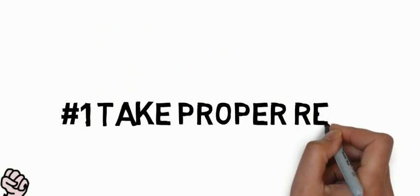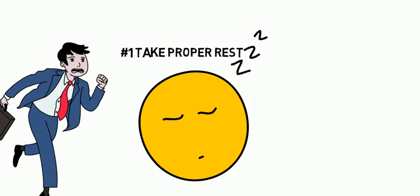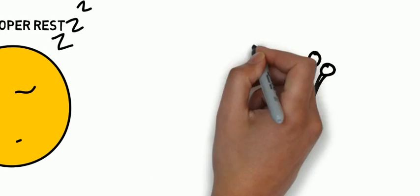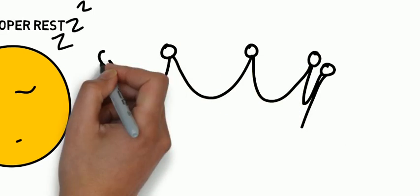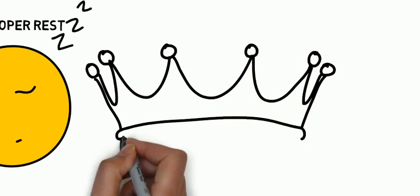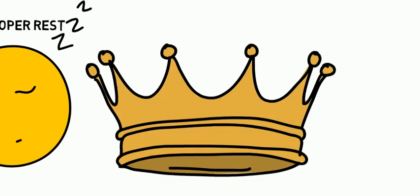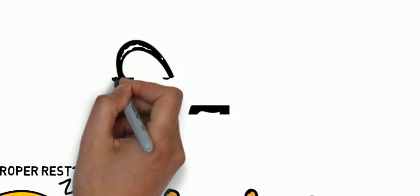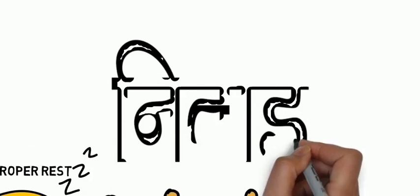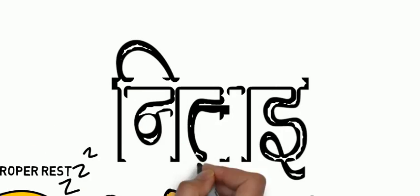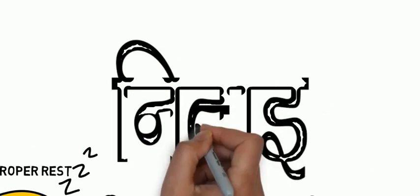Now we come to golden secret number two, which is the most important secret of all three, because it impacts all three secrets and is the core, the root of all of it: